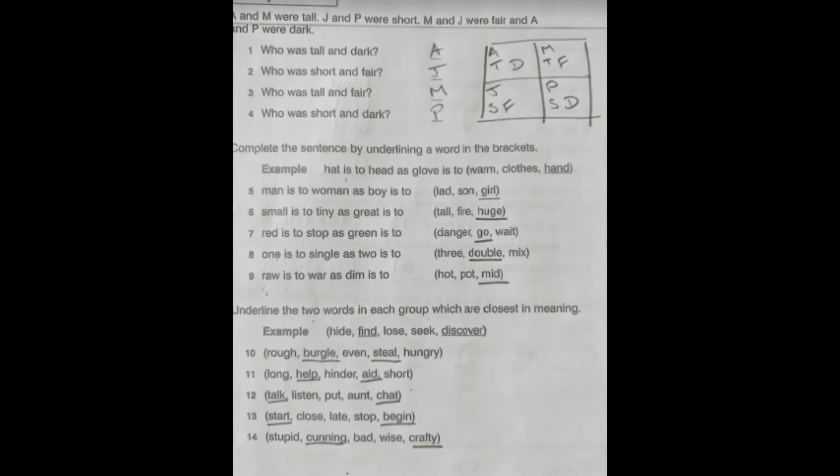Question 10: the two words closest in meaning are burgle and steal. Steal the type of metal is spelt differently, that's S-T-E-E-L. Question 11: it's help and aid. Question 12: talk and chat. Question 13: start and begin. And question 14: it's cunning and crafty. Count up how many ticks you've got on that page and give yourself a score out of 14.